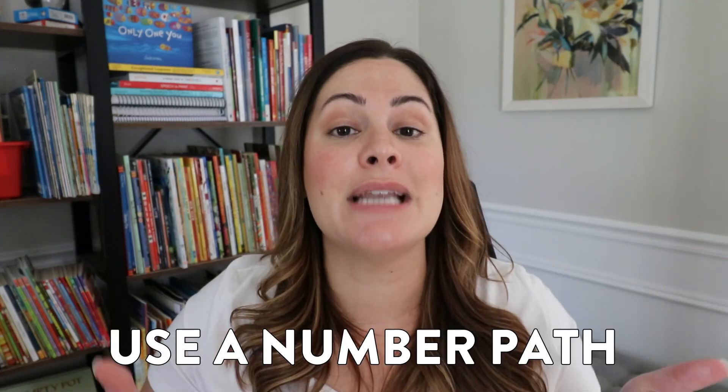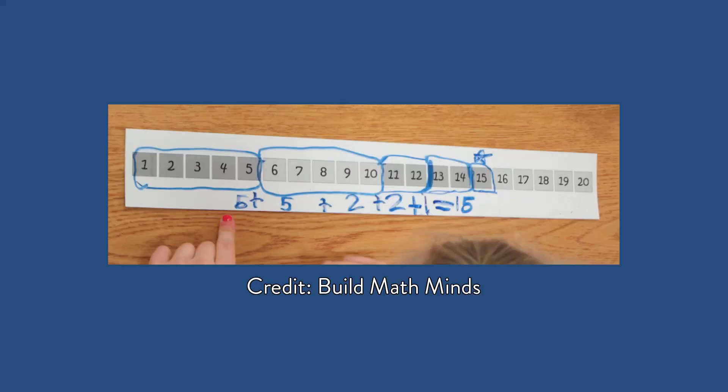Tip number two when teaching students how to use a number line is: don't jump right to a number line — use a number path. If you don't know what a number path looks like, it essentially looks just like a number line, but there are individual boxes for each of the numbers represented. Students are able to emphasize singular units and objects. It's a great visual model instead of going right to the length-based number line. I'll link some free number paths down in the description.